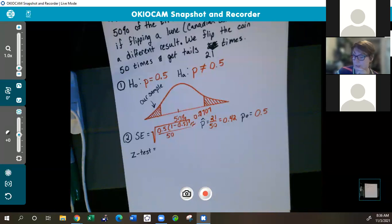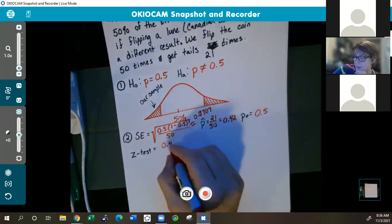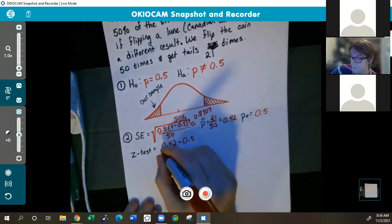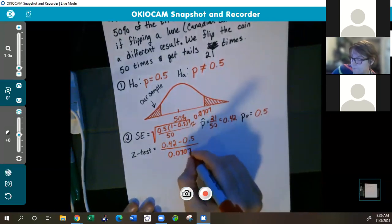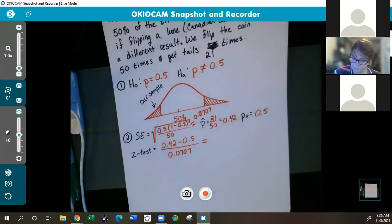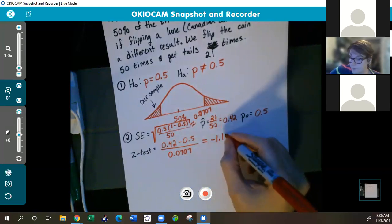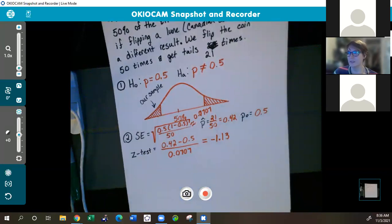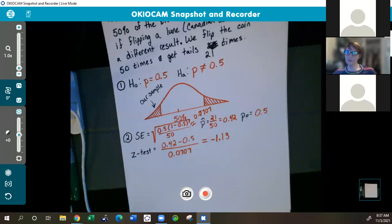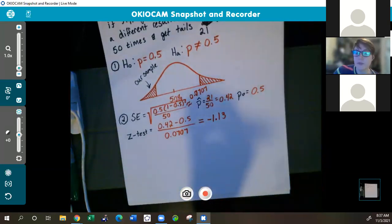So for my standard error, I got 0.0707. And for my p-hat, I got 0.42. All right, so now I have enough information to run that z-test. So that's going to be my p-hat minus my p-naught, all divided by my standard error. So I'm going to get a z-test statistic of negative 1.13. Go ahead and give me a thumbs up when you're ready for me to move on to the next part.